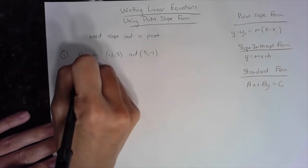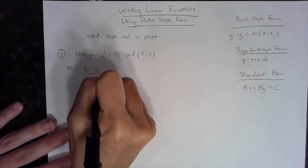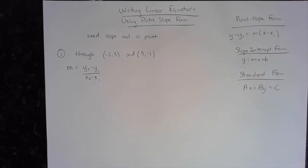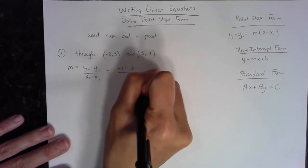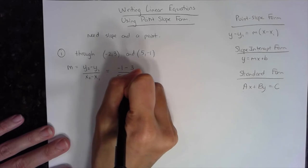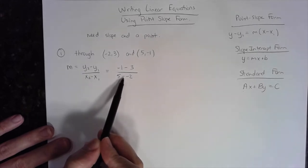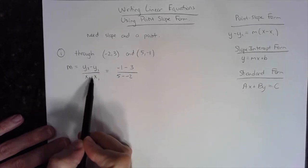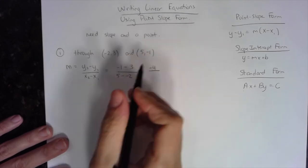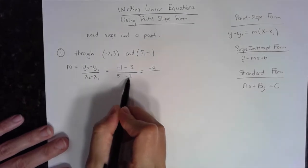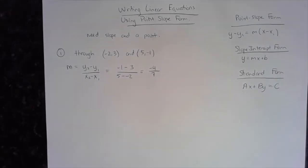The first thing we need is the slope. The slope formula is change in y over change in x: y2 minus y1 over x2 minus x1. So I take the second y-coordinate, negative 1, minus the first y-coordinate, 3, and divide by the second x-coordinate, 5, minus the first x-coordinate, negative 2. The minus sign does not remove the negative — it's a double negative on the bottom. Negative 1 minus 3 is negative 4; 5 minus negative 2 becomes 5 plus 2, which is 7. So the slope is negative 4/7.